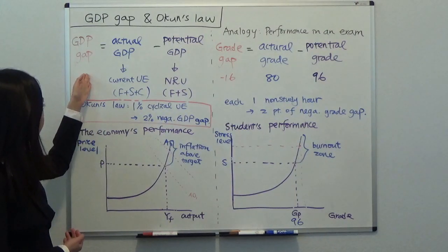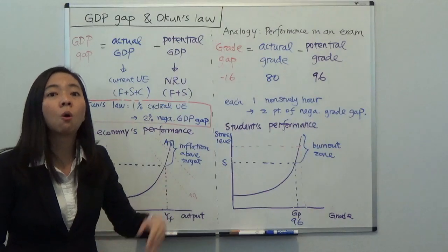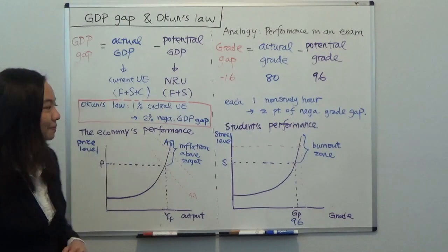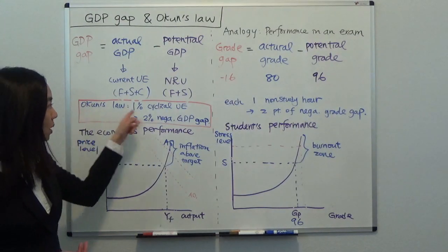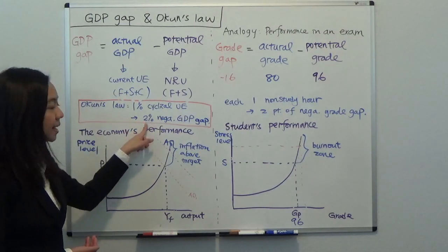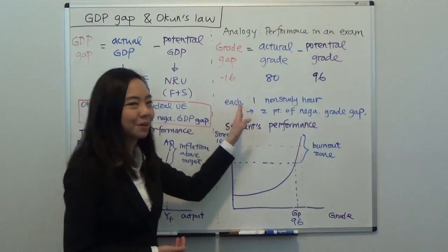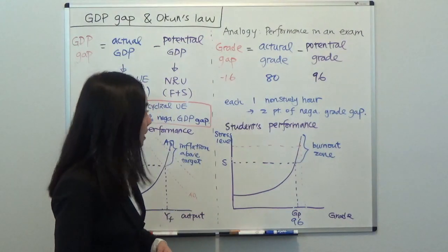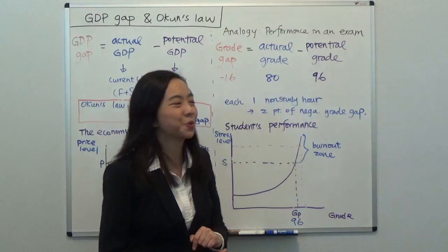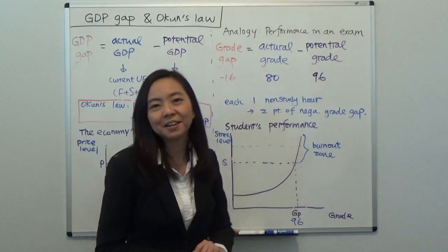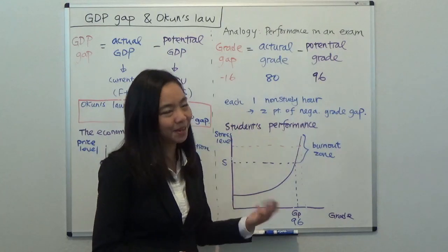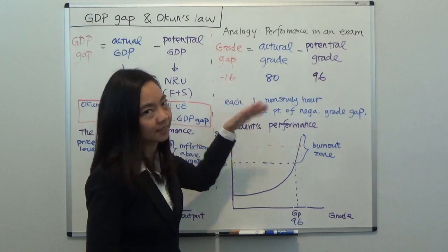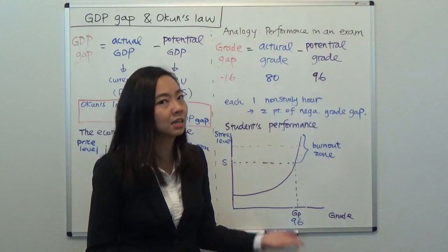This negative GDP gap reflects the fact that the economy did not use all its available labor to produce, meaning there are workers who are cyclically unemployed. Okun's Law tells us that for each 1% of cyclical unemployment, the economy will produce about a 2% negative GDP gap. That's similar to the study example: for each one non-studying hour, you get a two-point negative grade gap. So if you don't study for eight hours, that produces a grade gap of negative 16 — reflecting eight hours you were supposed to study but spent playing or partying.